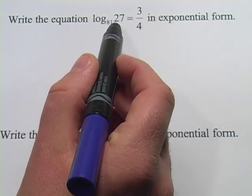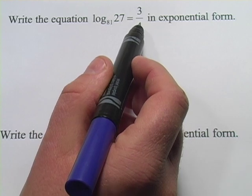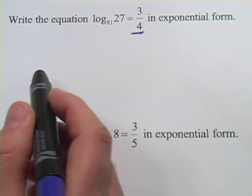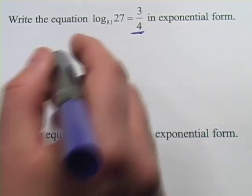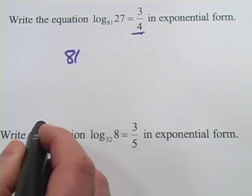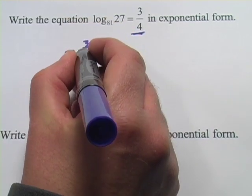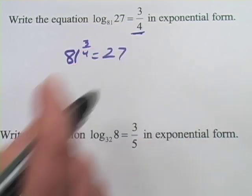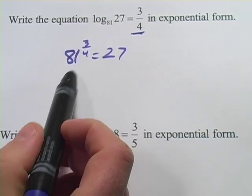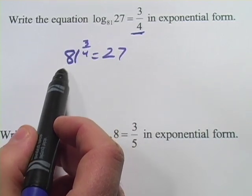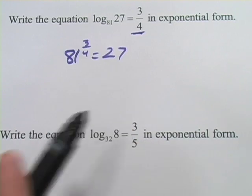So this one says log base 81 of 27 equals 3/4. And the power is always here. So this would be 81 to the 3/4 power equals 27, which makes sense if you do the math on that. Take the fourth root of 81, that's 3, raise it to the third power, that's 27.